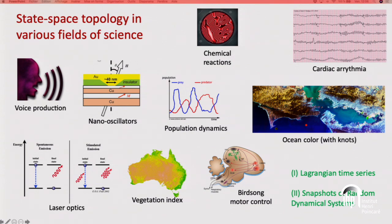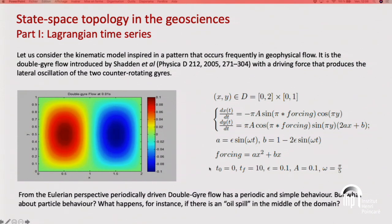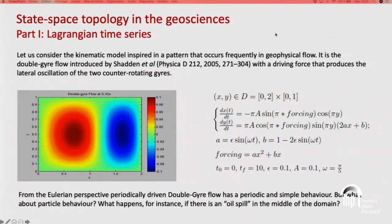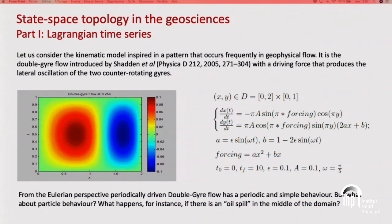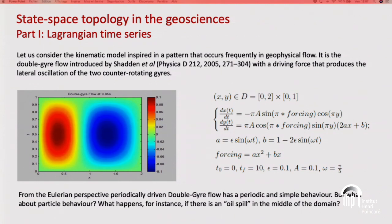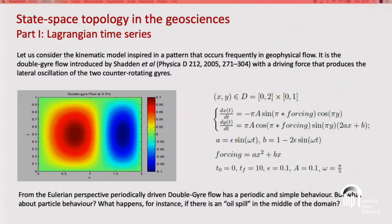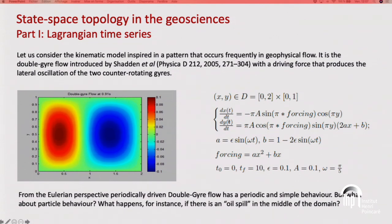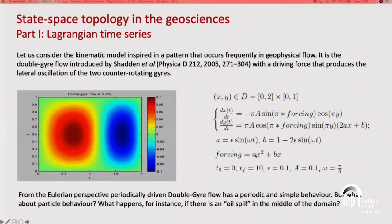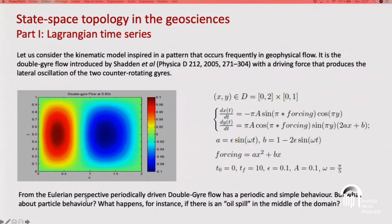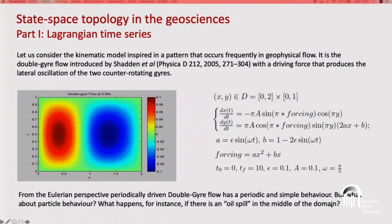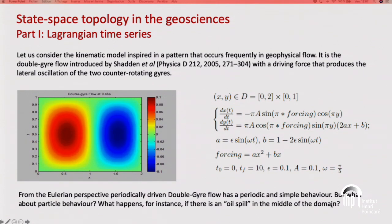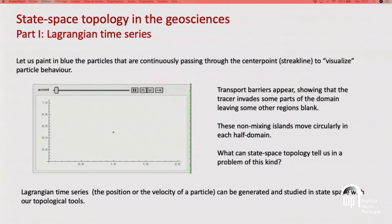I'm going to speak about two applications: Lagrangian time series and random dynamical systems. For Lagrangian time series, consider a kinematic model inspired by a pattern occurring frequently in geophysical flows — the double gyre flow, introduced by Shadden in a Physica D paper. It has a driving force producing a lateral oscillation of two counter-rotating gyres, described by a two-dimensional dynamical system with time-dependent forcing. From the Eulerian perspective we look at the vorticity: the driven double gyre has a simple periodic behavior, but what about particle behavior — what happens if there is an oil spill in the middle of the domain?